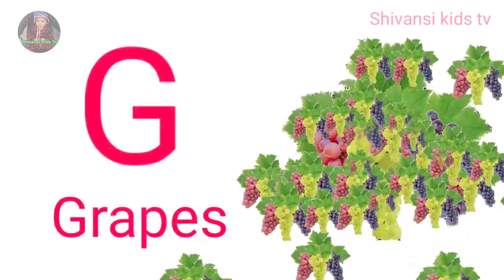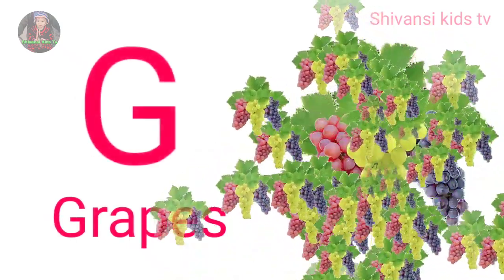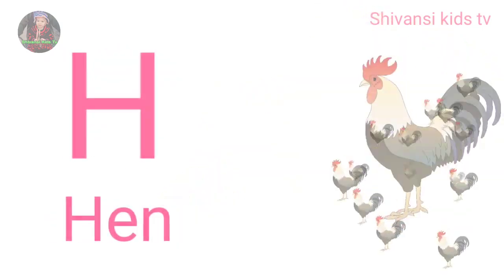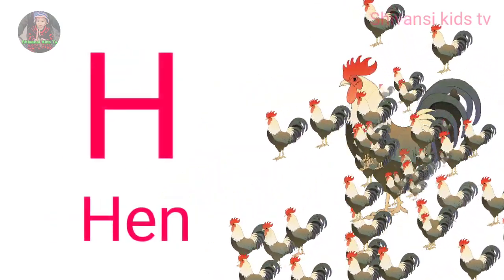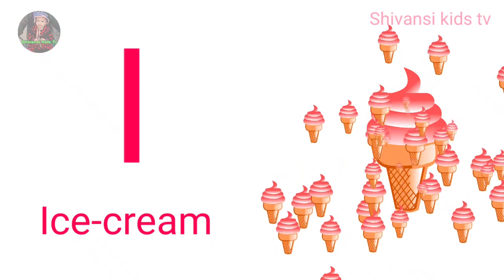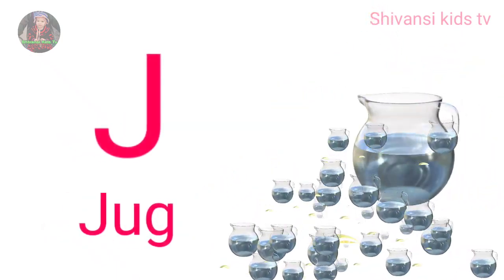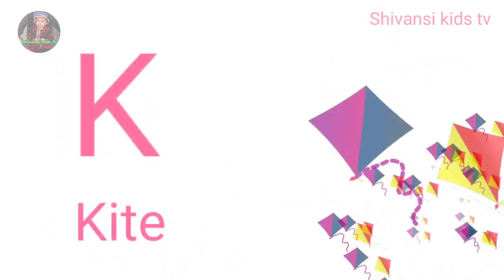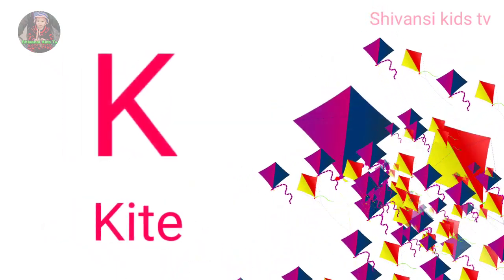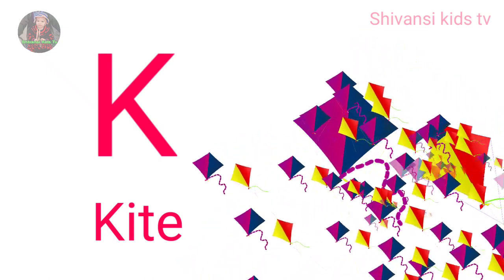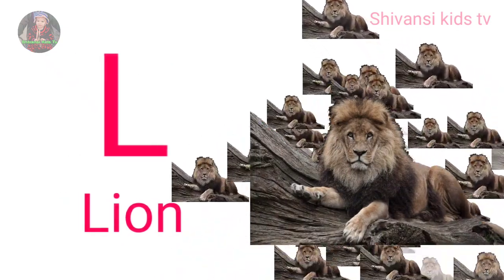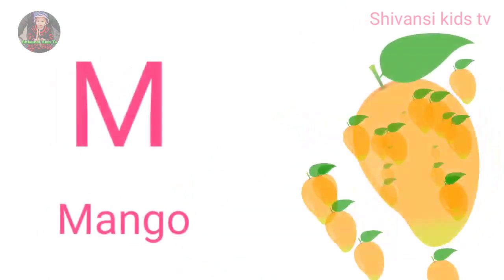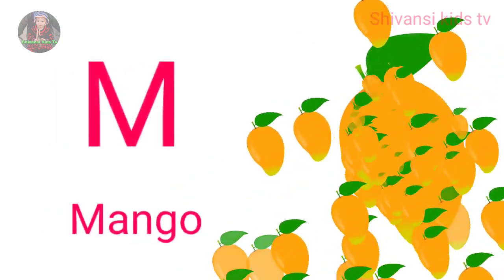G for grapes, H for hand, I for ice cream, J for jug, K for kite, L for lion, M for mango.